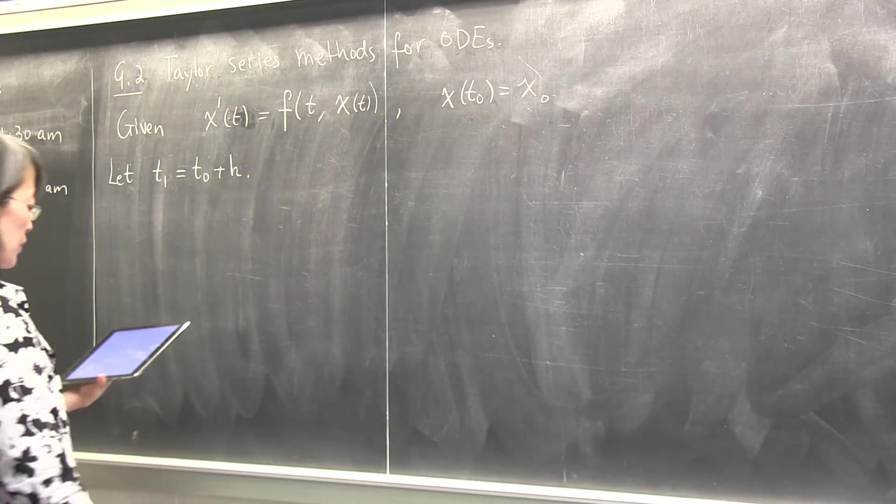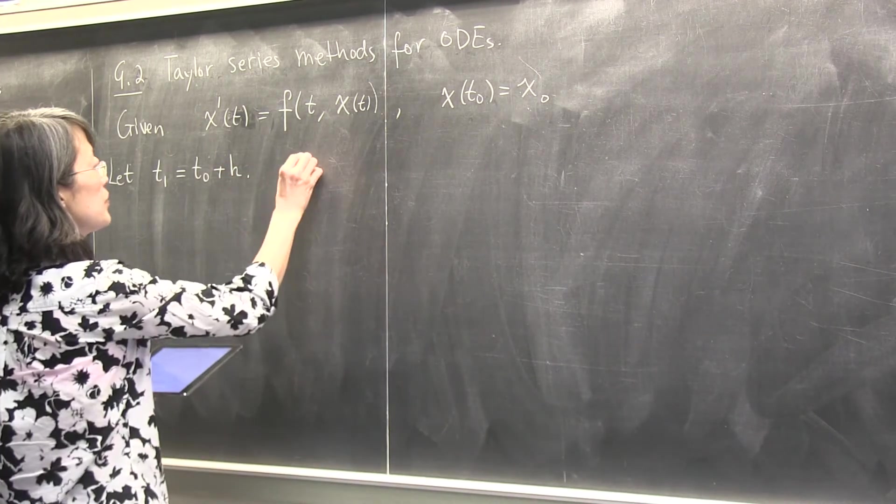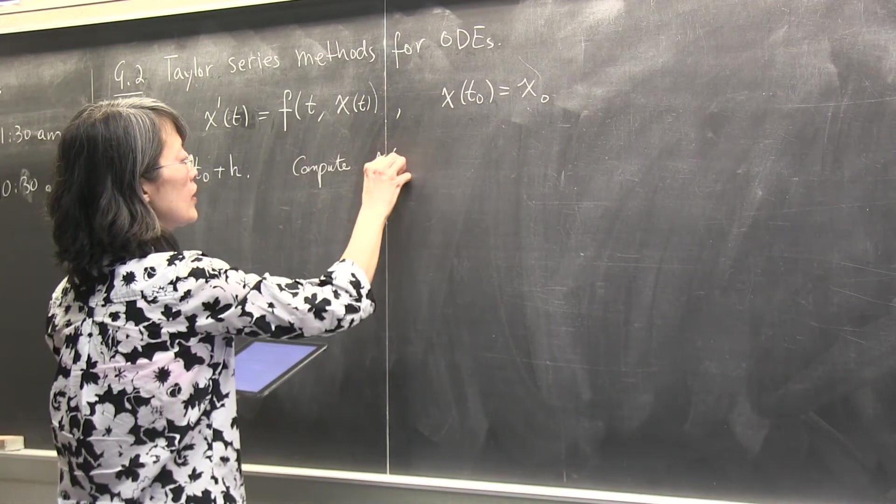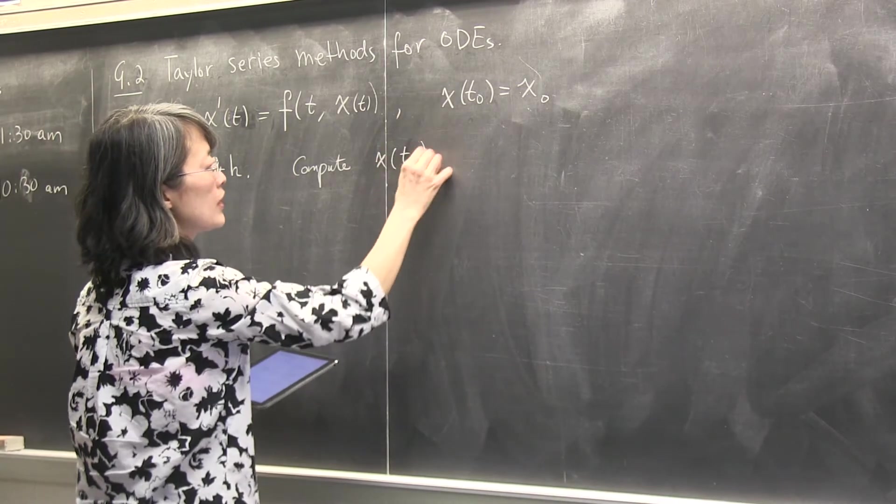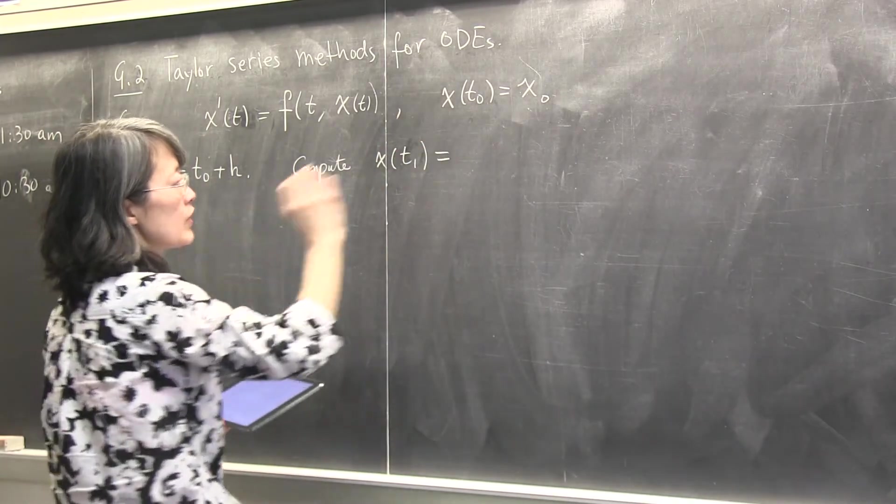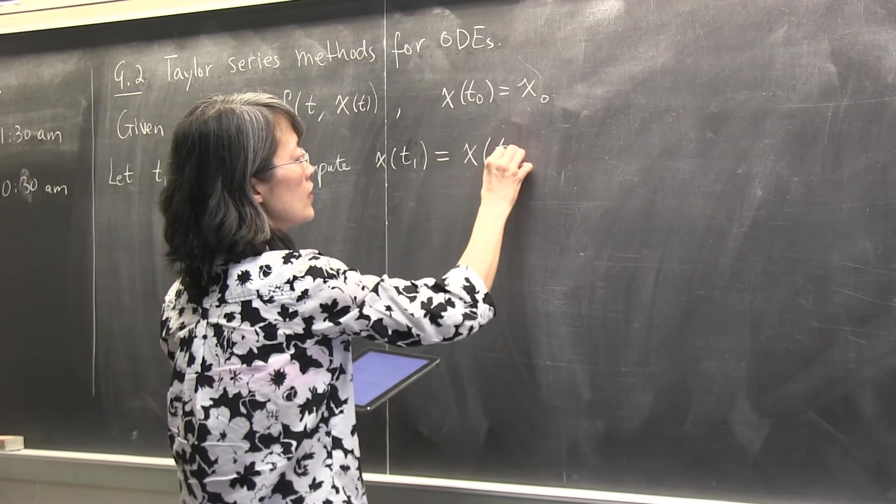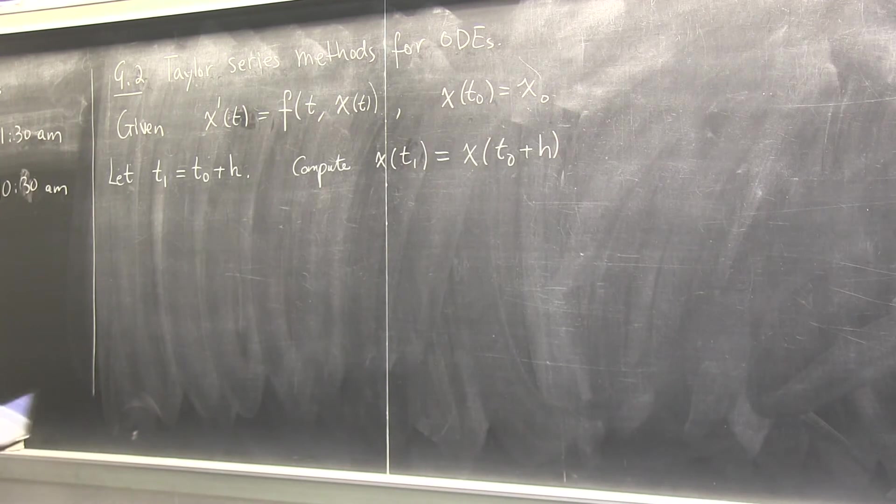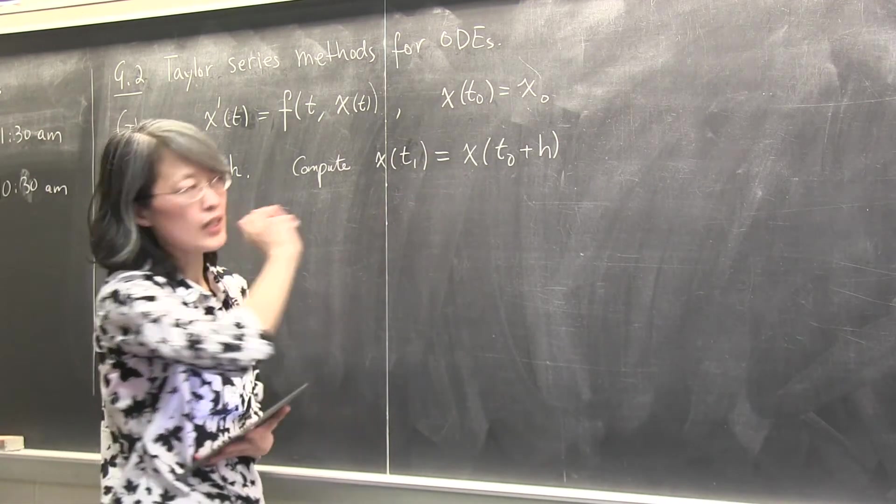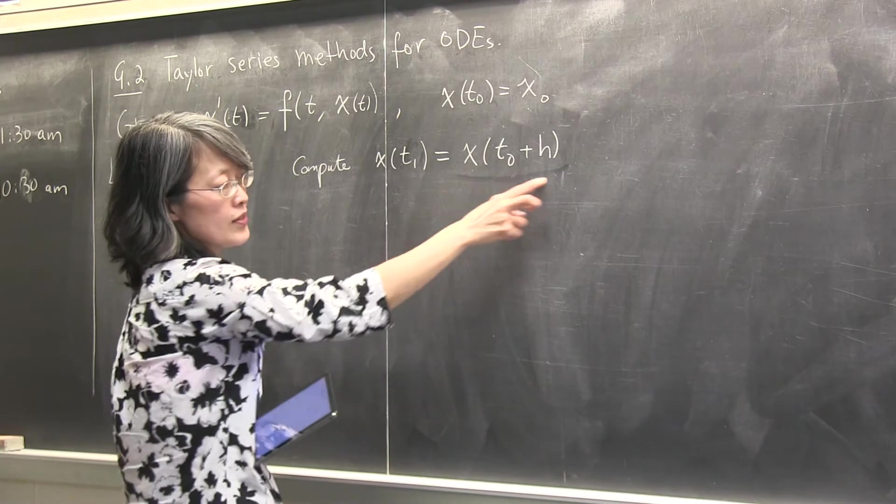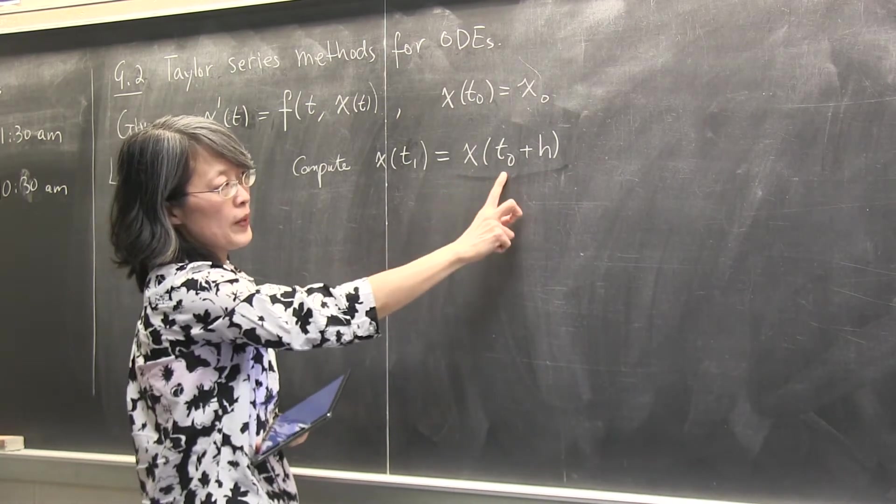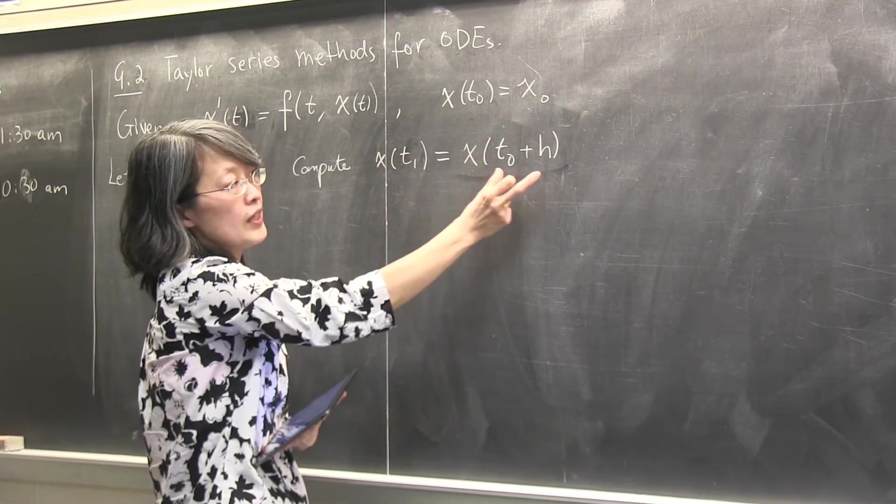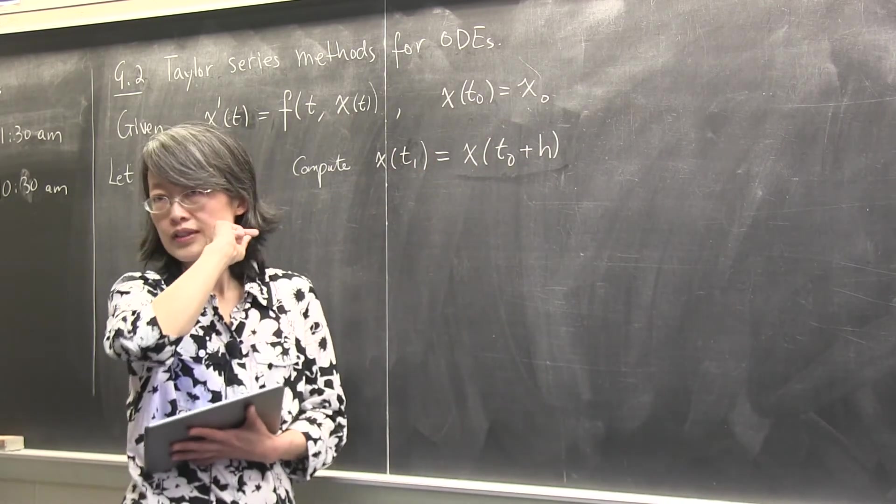So the method based on Taylor series. Do we still remember Taylor series? Yes. The whole class build on that. So you have a t0 so I want to look at the next time step which is t1 which is t0 plus h. We're just considering uniform grid here. And then what do you want to find? You want to compute the value x at t1.